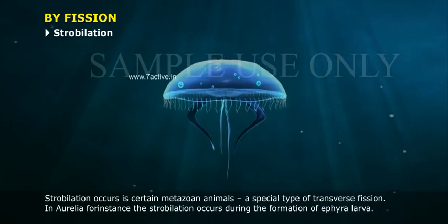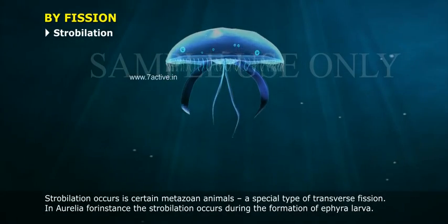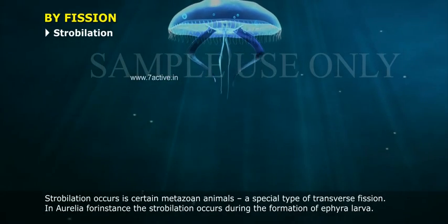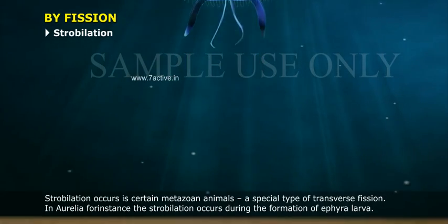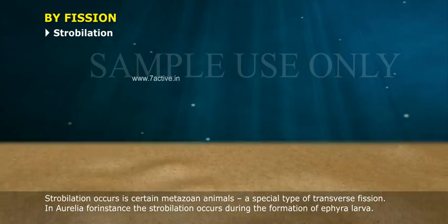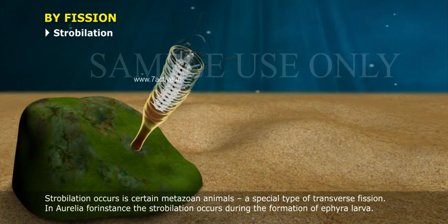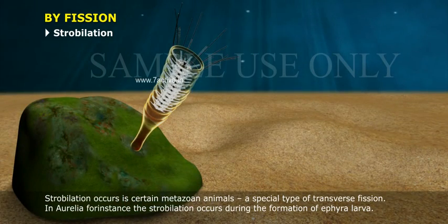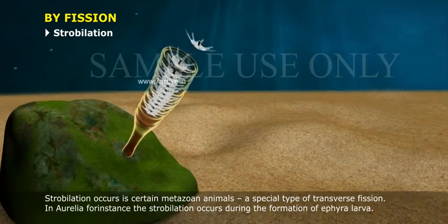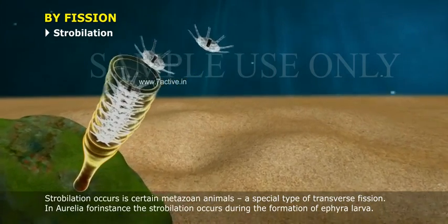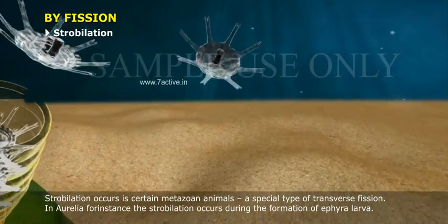Strobilation occurs in certain metazoan animals and is a special type of transverse fission. In Aurelia, for instance, strobilation occurs during the formation of the ephyra larva.